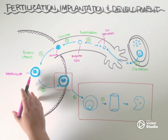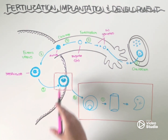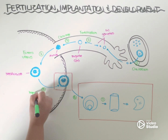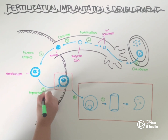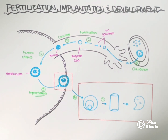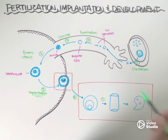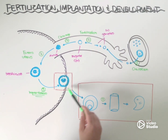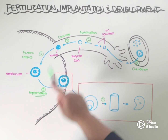Eventually that blastocyst is going to implant into the endometrial lining, and now, finally, we can say pregnancy has begun. Sometimes you'll see online sources use the word 'conception' to mark the timeline of events. Conception is a bit of a vague term because some people say that fertilization is the beginning of conception, whereas others say implantation is when conception begins. So to avoid confusion, let's just use these two terms — fertilization and implantation.